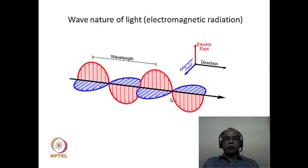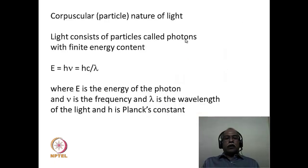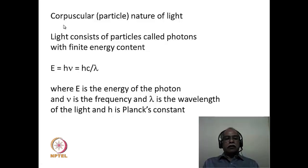To explain the corpuscular nature of light, one proposes that light consists of particles called photons with finite energy content. The very famous expression E = hν describes the energy of a photon, where h is Planck's constant and ν is the frequency of electromagnetic radiation. This is correlated to the velocity of light in vacuum, C, divided by lambda: E = hν = hC/λ, where lambda is the wavelength of the light.